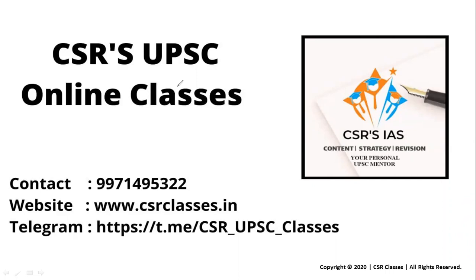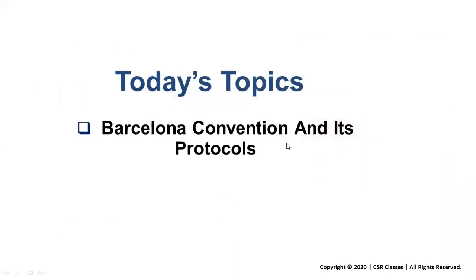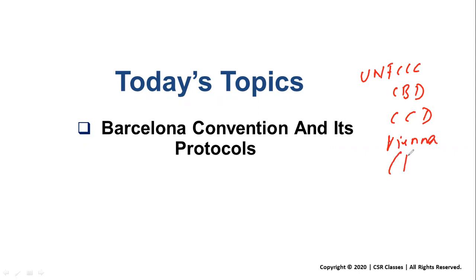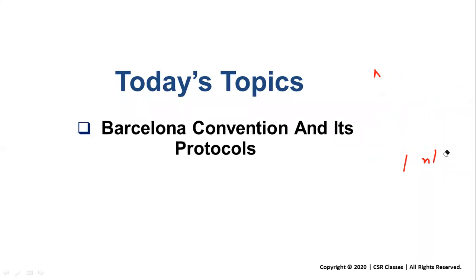Welcome to CSS UPC online classes. This video covers a particular topic from environment — a specific convention. The convention name is the Barcelona Convention and its protocols. We know there are a lot of environment-related conventions: UNFCCC is related to climate change, CBD is related to biological diversity, CCD deals with desertification, and the Vienna Convention covers ozone with the Montreal Protocol.